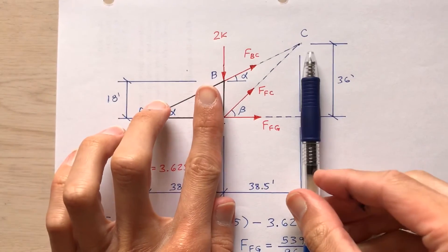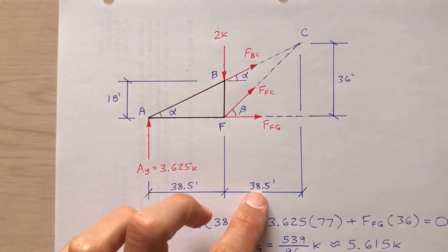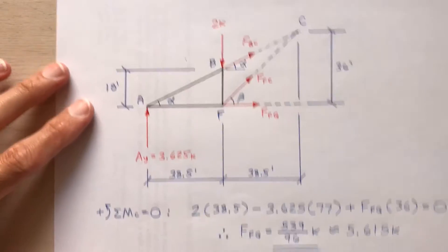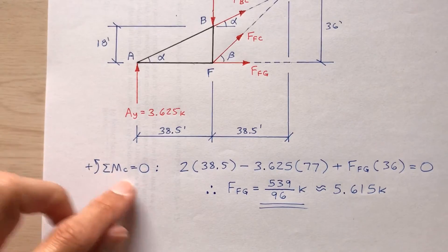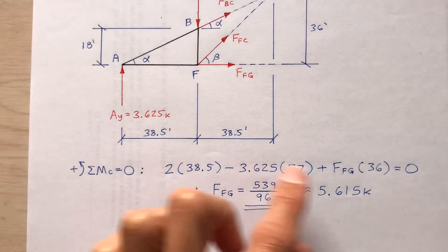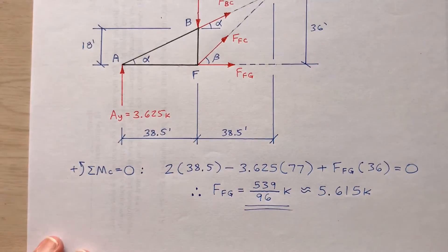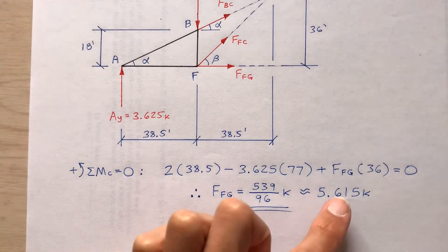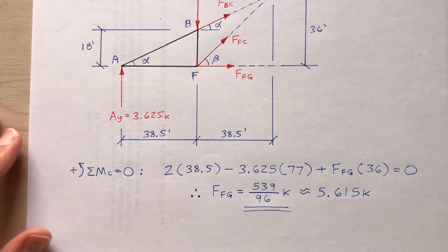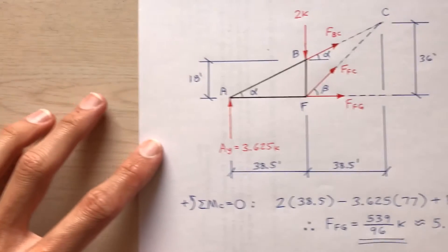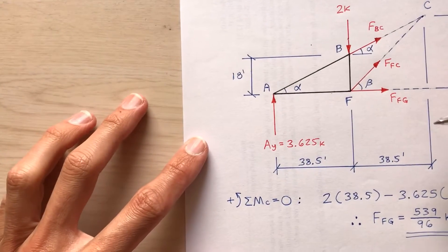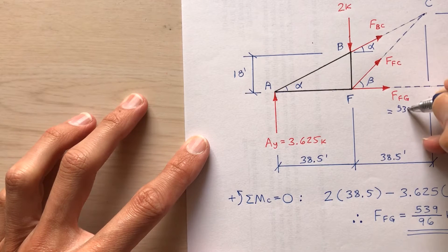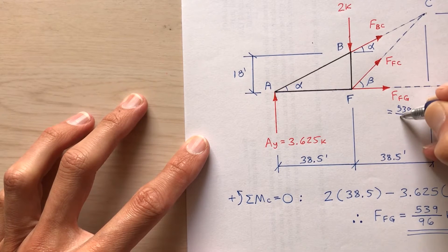The horizontal distance between F and C is 38.5 feet. Taking the sum of moments about point C equals zero, with F_FG as the only unknown, I calculate F_FG to be approximately 5.615 kips — exact value 539 over 96 kips.